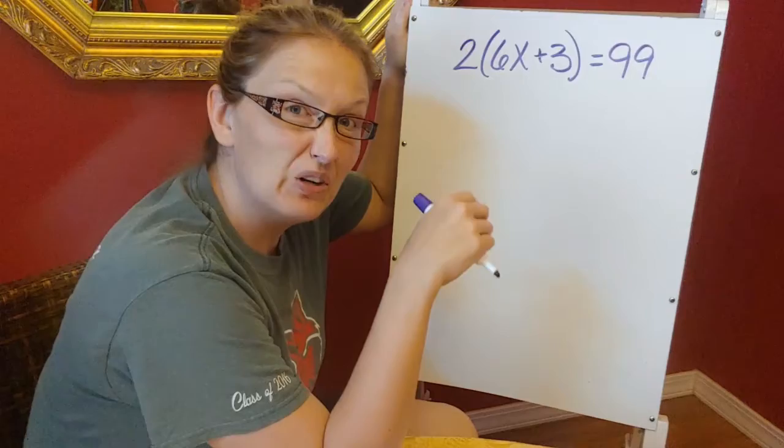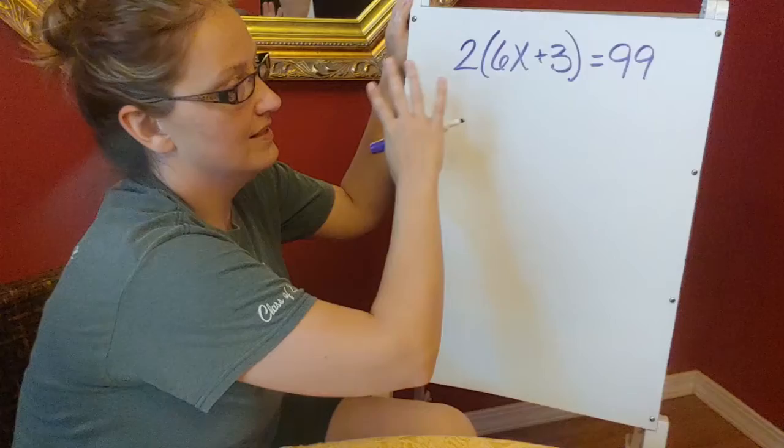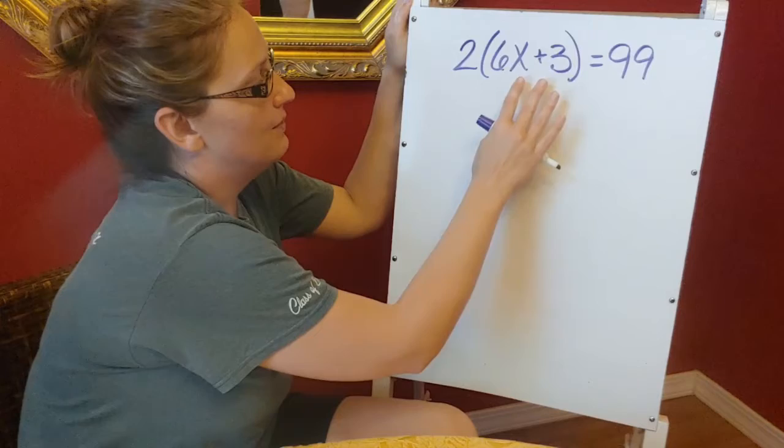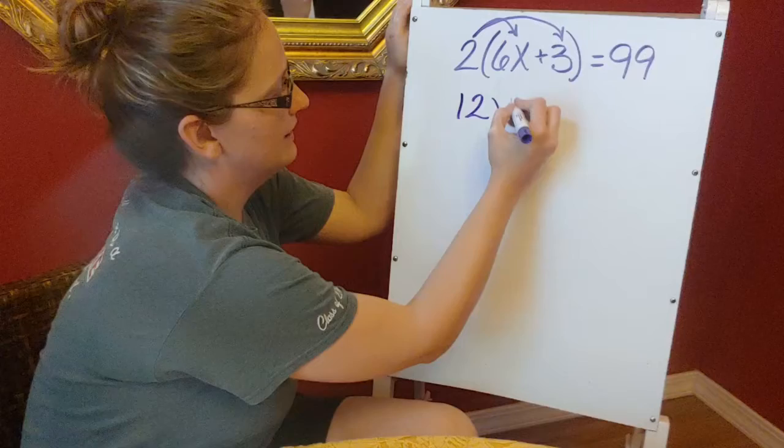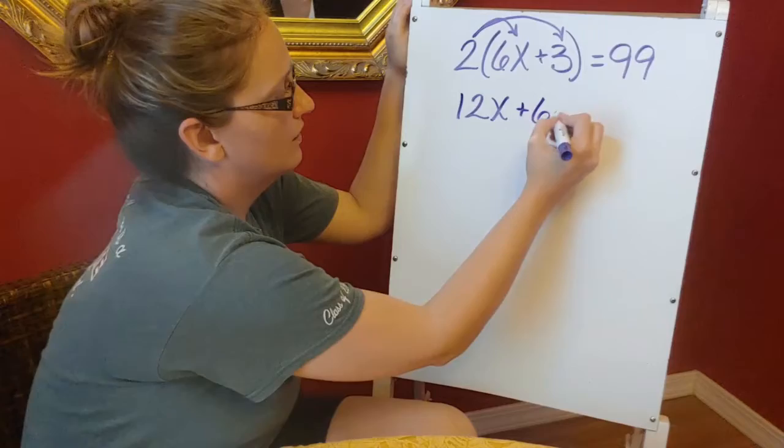So I've got an equation up here. This goes beyond that two-step, this is multi-step. I know that whenever I have this number set up like this with parentheses, I'm going to have to distribute first before I do anything else.